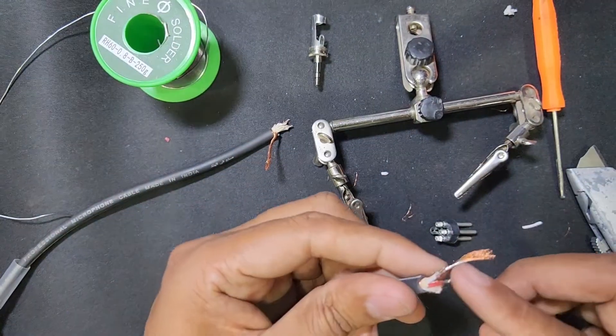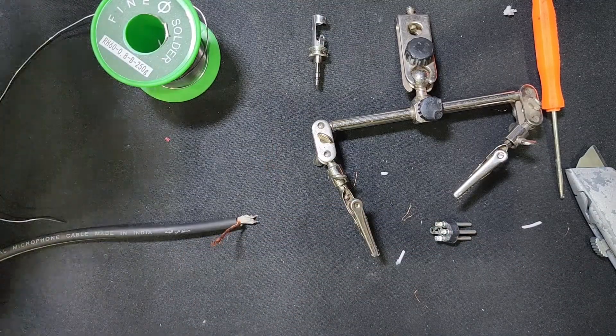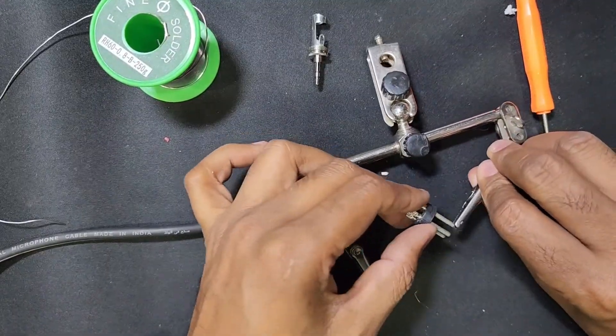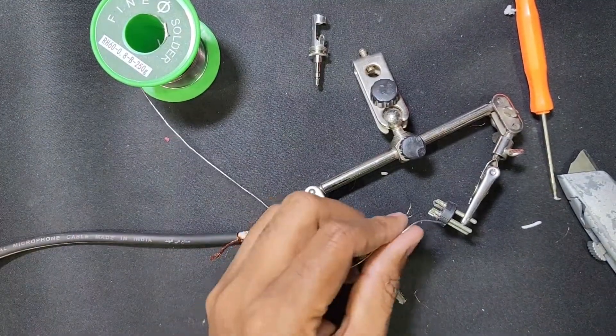This is the ground. Ground I will connect with number one, so you have to check first which one is number one. This one is number one, so first I connect the number one connection.